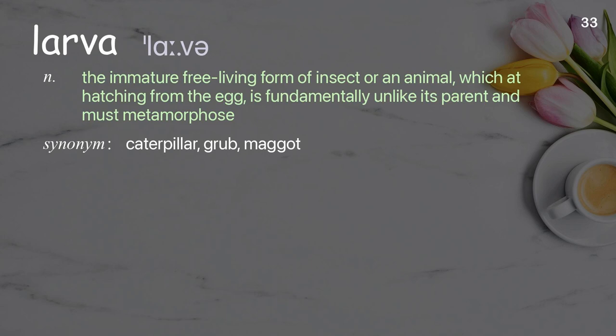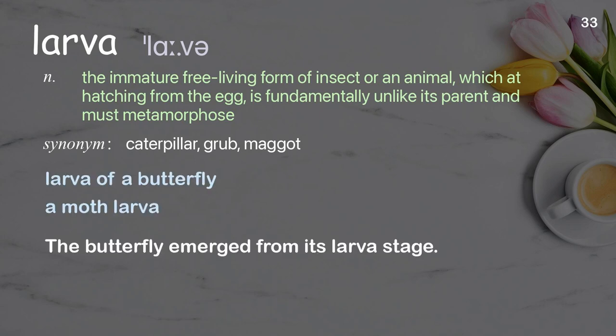Larva: The immature free-living form of an insect or animal, which at hatching from the egg is fundamentally unlike its parent and must metamorphose. Examples: Larva of a butterfly, a moth larva. The butterfly emerged from its larva stage.